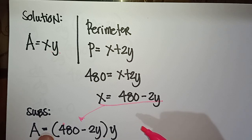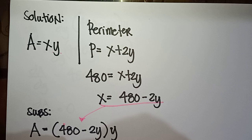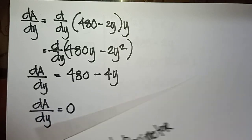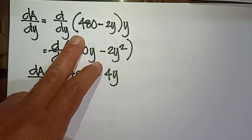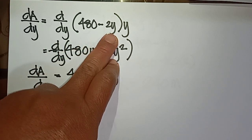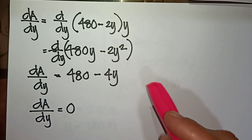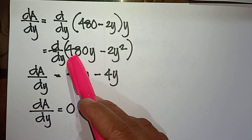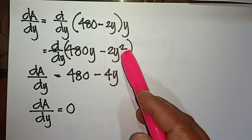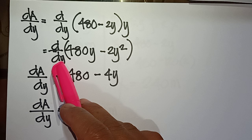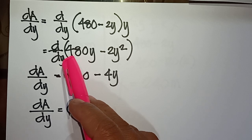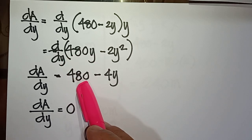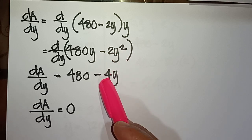We now find the derivative of the area with respect to y. Expanding: A = 480y − 2y². The derivative dA/dy = 480 − 4y.